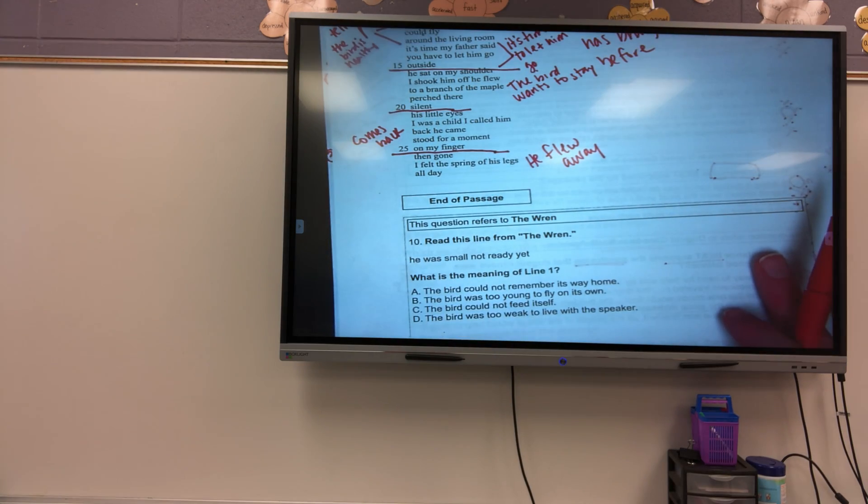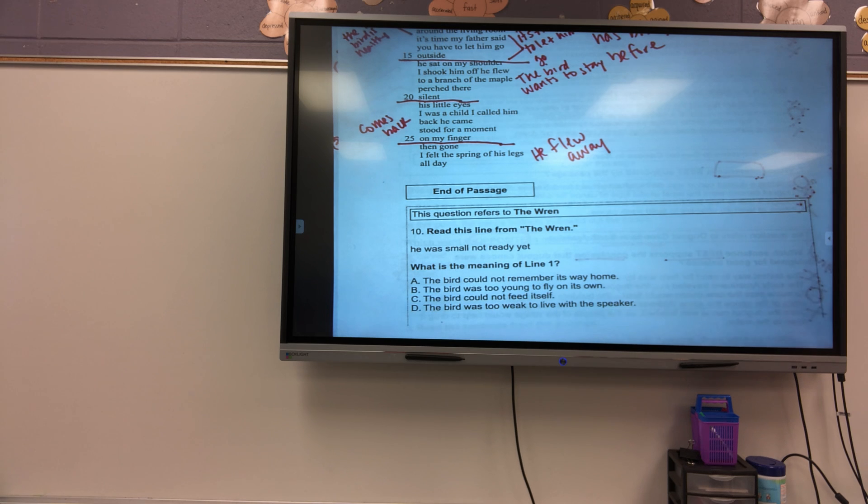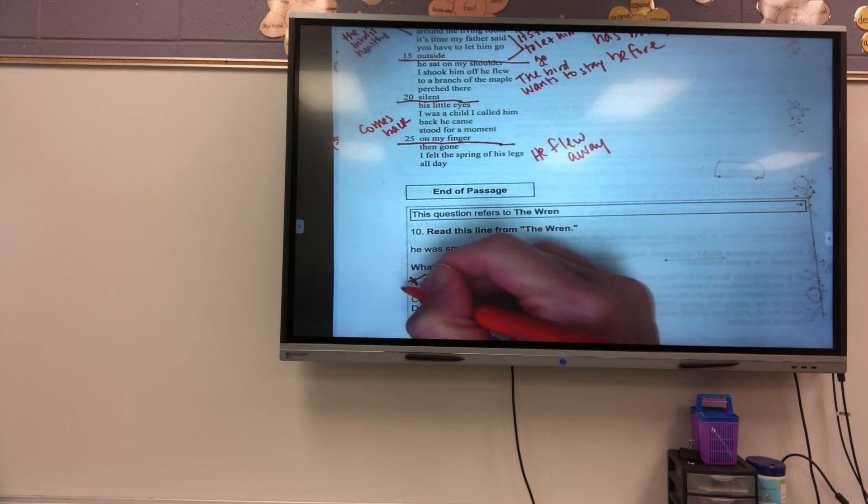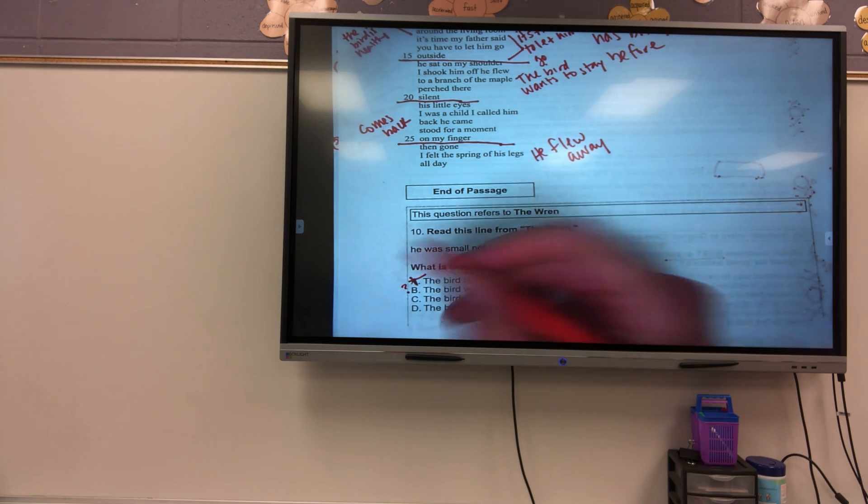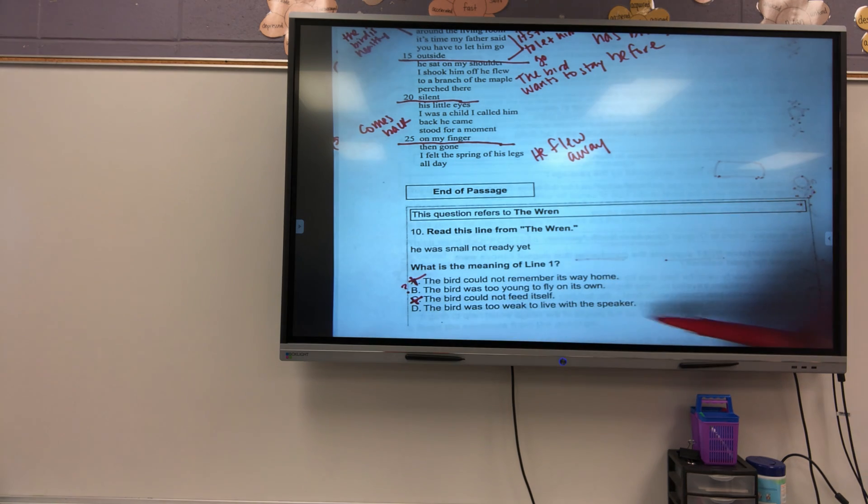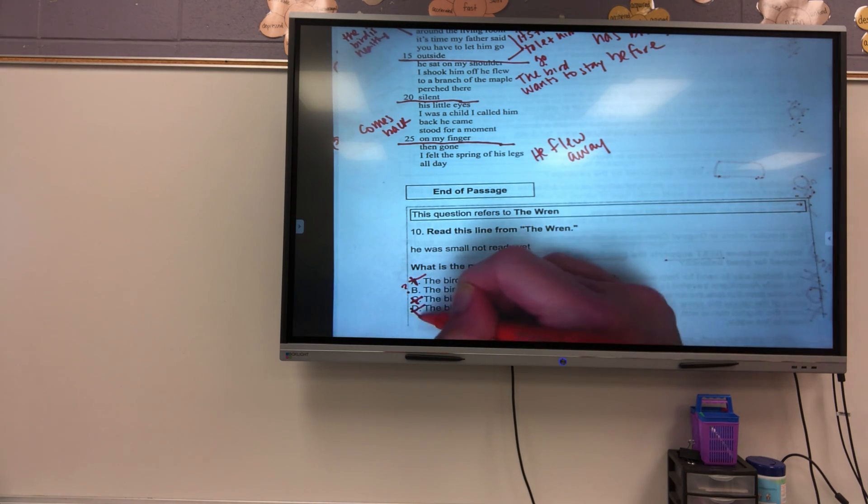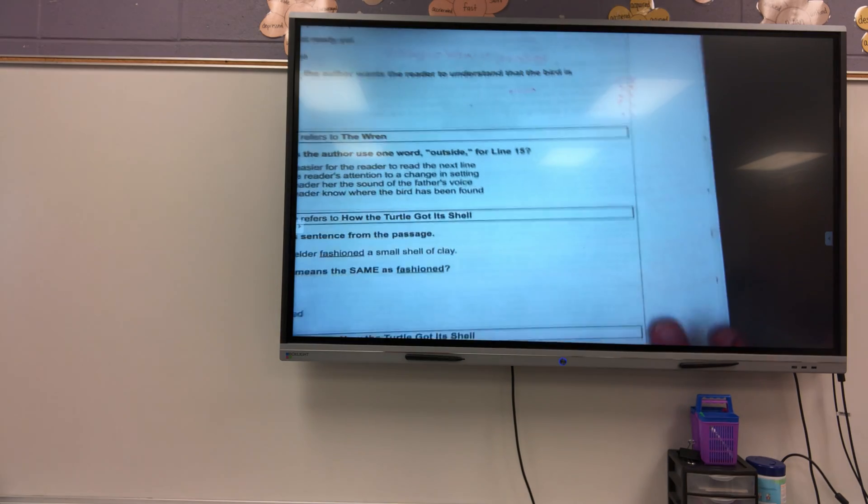So, when it says, he was small, not ready yet, from line one, what does that mean? Does that mean that the bird could not remember its way home? No. Does it mean that the bird was too young to fly on its own? Maybe. I like that. Maybe. The bird could not feed itself? No. It didn't say that. It didn't imply that at all. The bird was too weak to live with the speaker. No. He actually was thriving with her. So, my answer is? B.